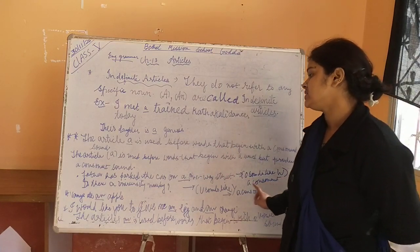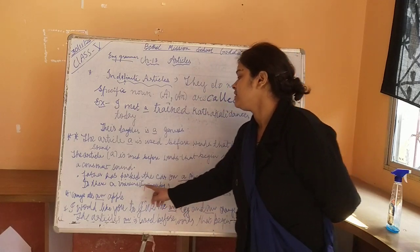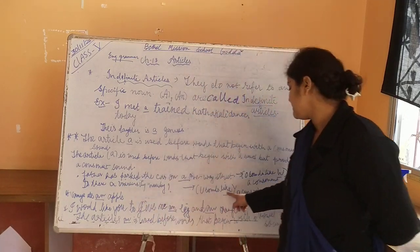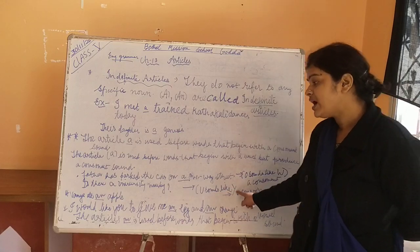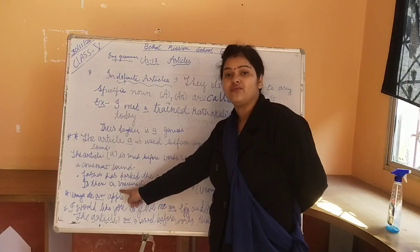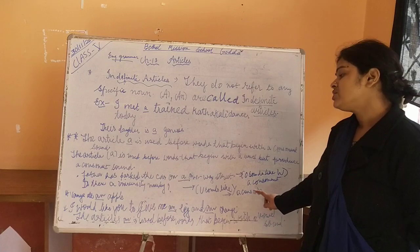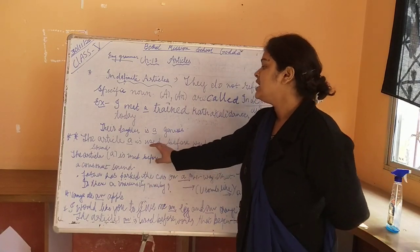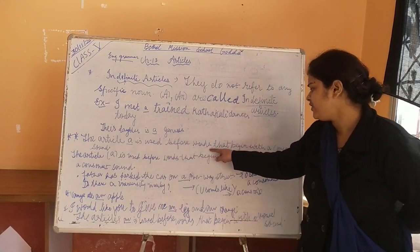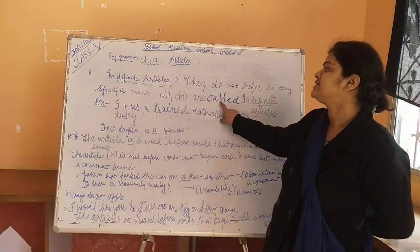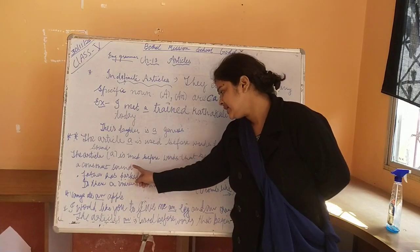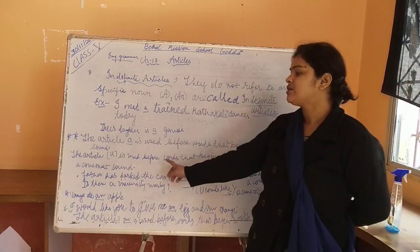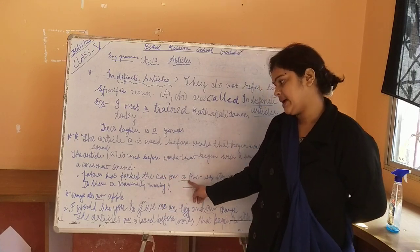Another example: Is there a university nearby? Here A is used before a vowel. U is a vowel but U sounds like Y, which is a consonant. So the article A is used before words beginning with a vowel that produces a consonant sound — this is the example for that rule.